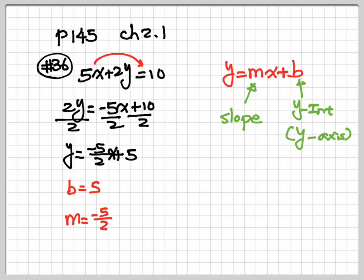b is on the y-intercept, which is located on the y-axis. Now, for the slope: if the numerator is a positive number, you go up. If a negative number, you go down. The denominator always goes to the right.